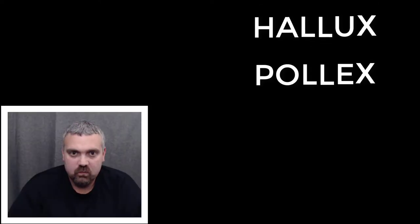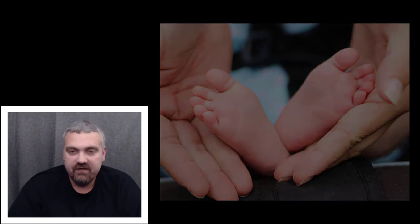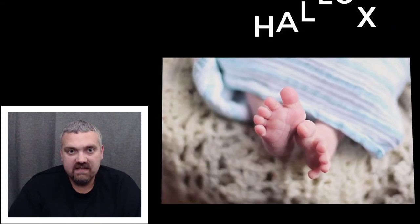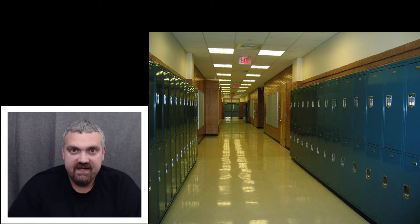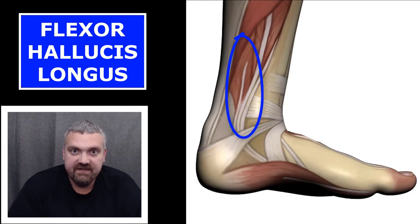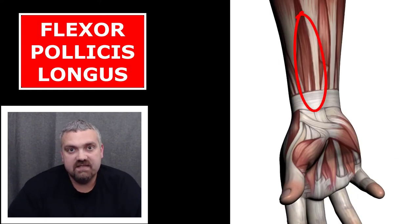Hallux versus pollux. When we're talking about fingers and toes, we usually use terms like phalanges and digits, but the great toe and your thumb get special names. Hallux means great toe, or big toe. Pollux means thumb. When you're walking down the hall, you're using your feet — hallux, big toe. When you're taking a poll, I think thumbs up, thumbs down — so pollux means thumb. Key muscle examples: flexor hallucis longus is the long muscle that flexes your great toe if you're scrunching your toes together, and flexor pollicis longus would flex your thumb.